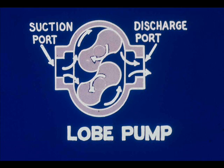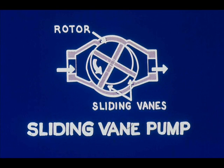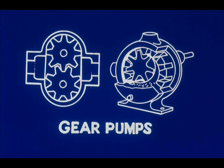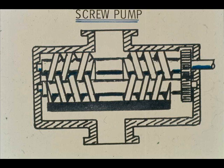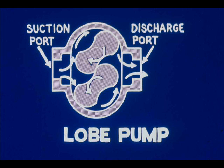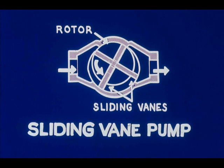As the lobes in a lobe pump rotate, they too reduce the volume the liquid can occupy and force it out into the discharge line. The sliding vane pump works on the same principle — vanes are mounted on a rotor that is eccentric to the pump casing. As the rotor turns, vanes first slide out to trap a quantity of liquid, then slide in to reduce the volume and force it into the discharge line. Let's look at these rotary pumps again: gear pumps, screw pump, lobe pump, and sliding vane pump.